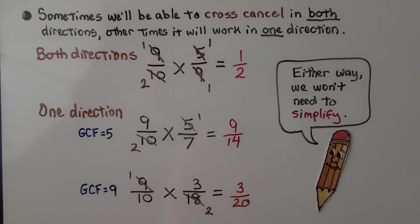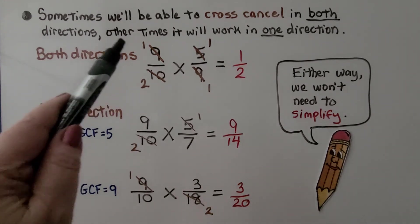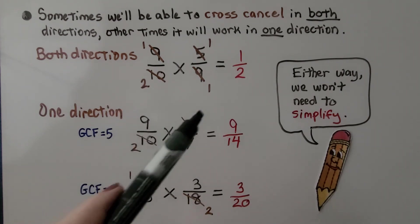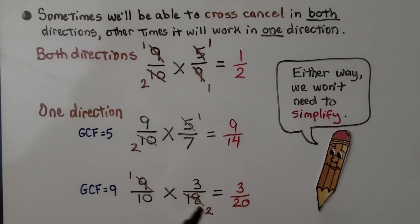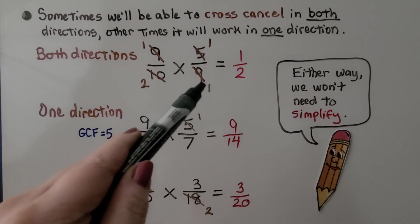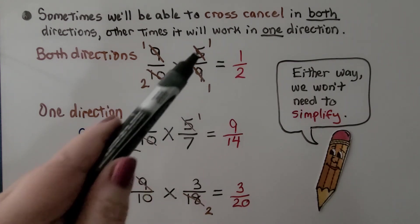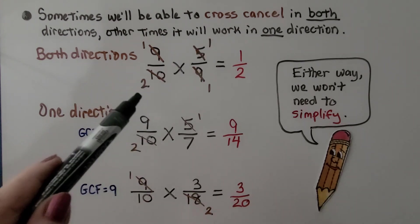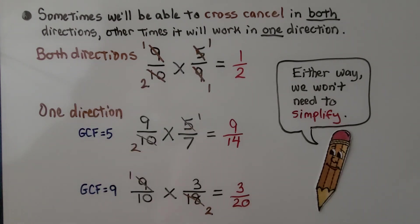Sometimes we'll be able to cross cancel in both directions. Other times, it will work in one direction. If we do both directions, we're crossing this way, canceling out the 9's as a 1. And if we go this way, we're crossing out the 5 and the 10 as a 1 and a 2. We don't need to simplify.